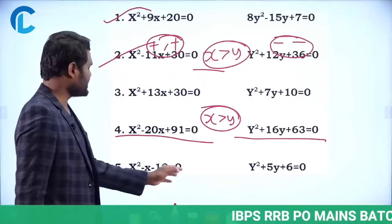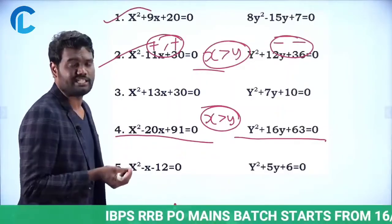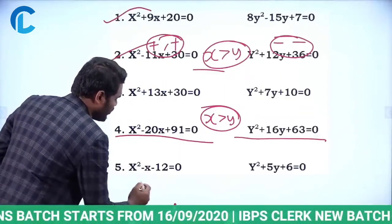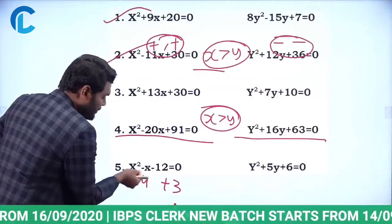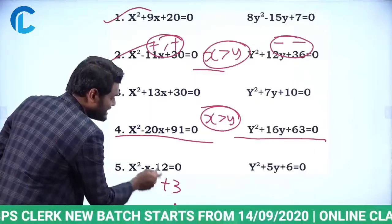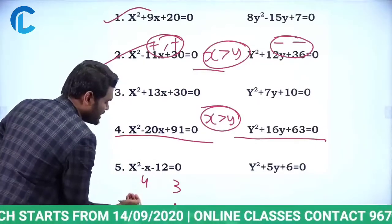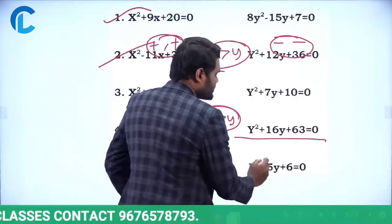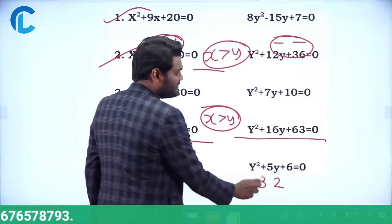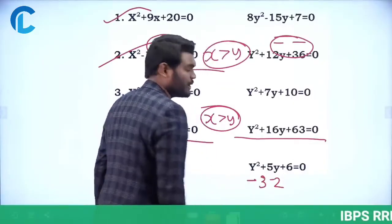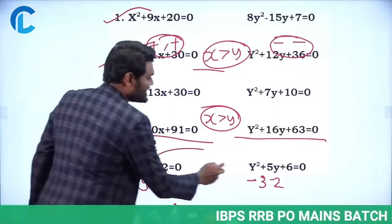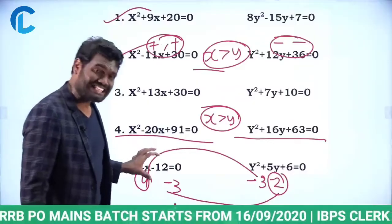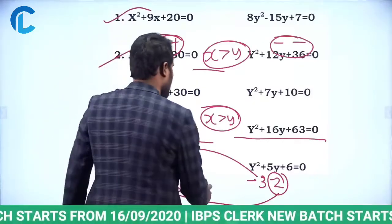Let us look at the next one: x² - x - 12 = 0 and y² + 5y + 6 = 0. We need to solve this question. For x, minus x can be written as minus 4 plus 3; minus 4 × plus 3 is minus 12. So roots are plus 4 and minus 3 (opposite signs). For y, 5 = 3 + 2 and 3 × 2 = 6, so roots are minus 3 and minus 2. Comparing: 4 is greater than minus 3, but minus 2 is greater than minus 3, so one time x is greater and another time x is less.